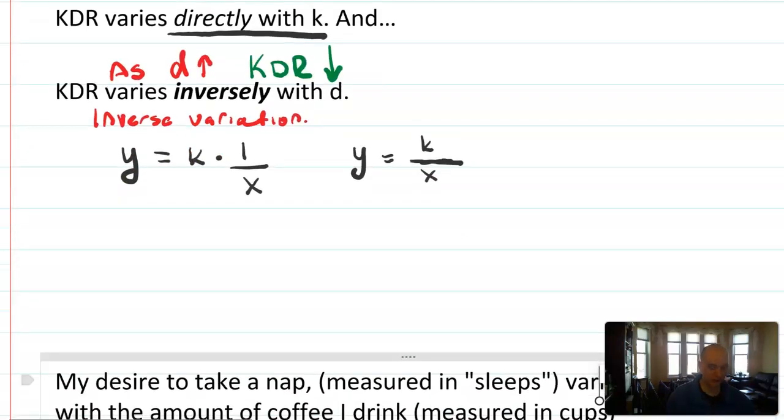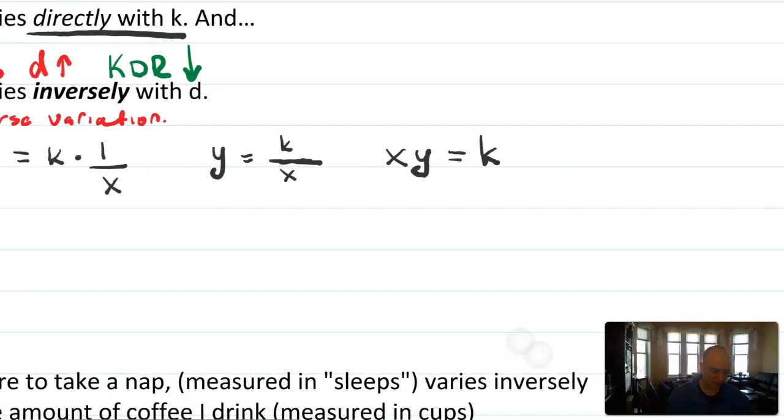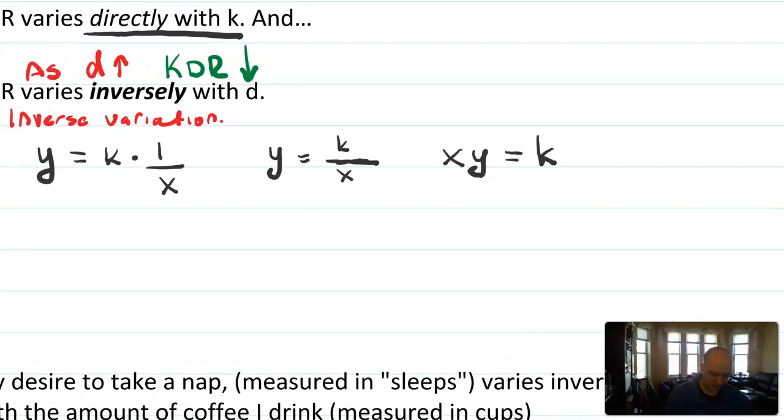We have Y equals K over X. And another way you'll see this is multiplying both sides by X, so sometimes you see this formatted as XY equals K. That is, the way to think about this is to maintain constant value K, as X goes up, Y would have to go down. Or if Y were to go up, X would have to go down for this K value to remain constant. So that's another way to think about that proportionality.